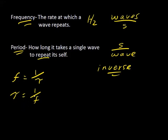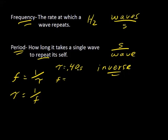Let's look at a problem. If we have a wave with a period of 0.40 seconds and we want to know what the frequency is — well, the frequency is the inverse of the period. So if I find the inverse of 0.40, I get 2.5 Hertz. The inverse of the period is the frequency.